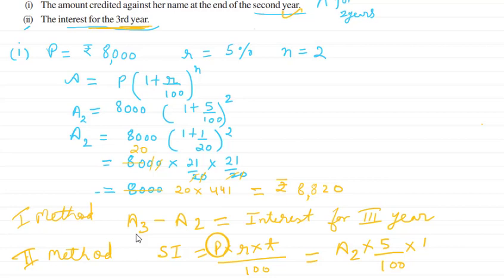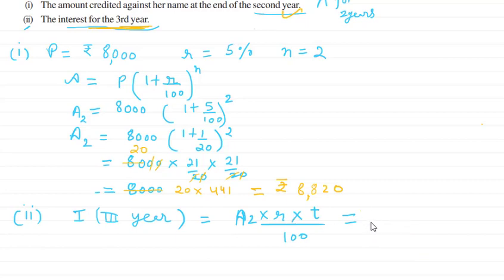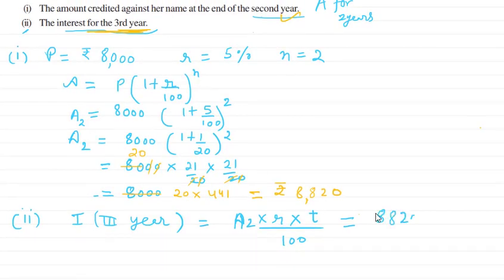So you can use either method. Now using the second method: A2 × R × T / 100 = 8,820 × 5 × 1 / 100. Calculating this gives us 441 rupees. So 441 rupees is the answer for the second part — the interest for the third year.